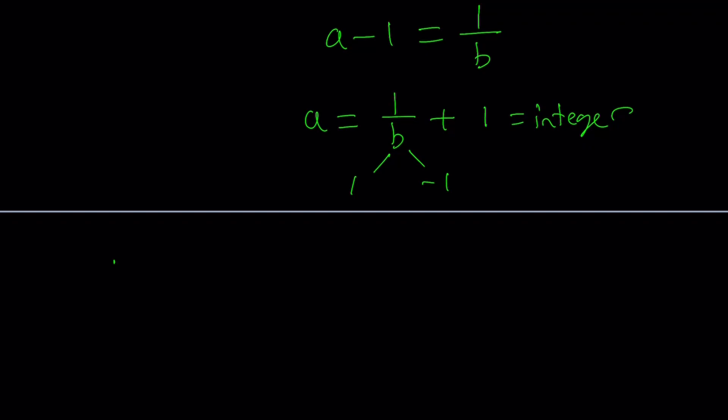For example, if b is equal to 1, we get a equals 1 plus 1, which is 2. Nice. Okay. What happens if b is equal to negative 1? If b is equal to negative 1, a equals negative 1 plus 1, and that means a equals 0.